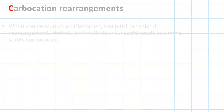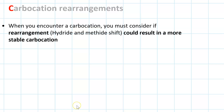Carbocation rearrangements. Let's talk about this in detail. Anytime a carbocation is formed in a chemical reaction, it is subject to rearrangement if either a hydride shift or a methide shift would result in a more stable carbocation.